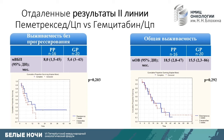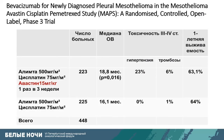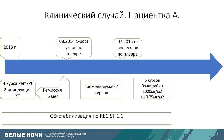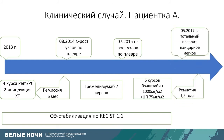Also in 2015, the MAPS trial results were published, testing bevacizumab as a target agent added to chemotherapy. This improved survival to 19 months compared to 16 months with chemotherapy alone. Our patient received five courses of second-line gemcitabine/cisplatin with dose reduction due to prior treatment. She did not receive bevacizumab, and remission lasted 1.5 years.